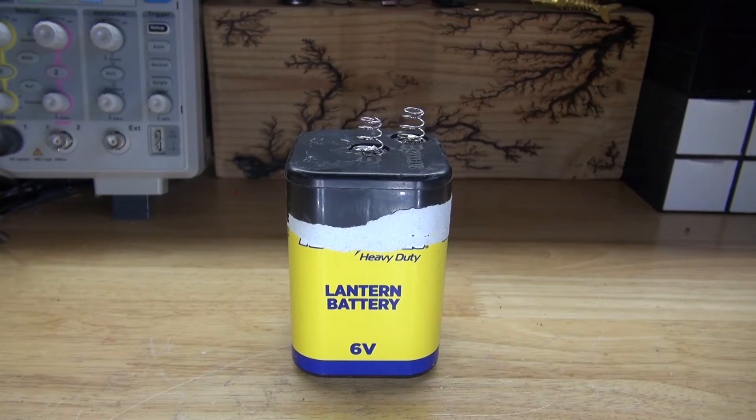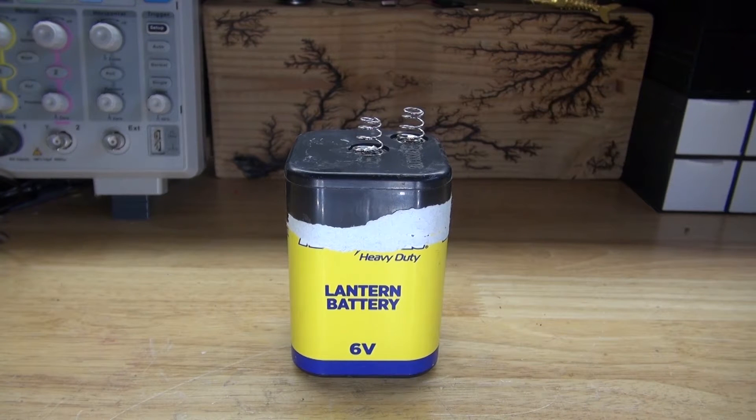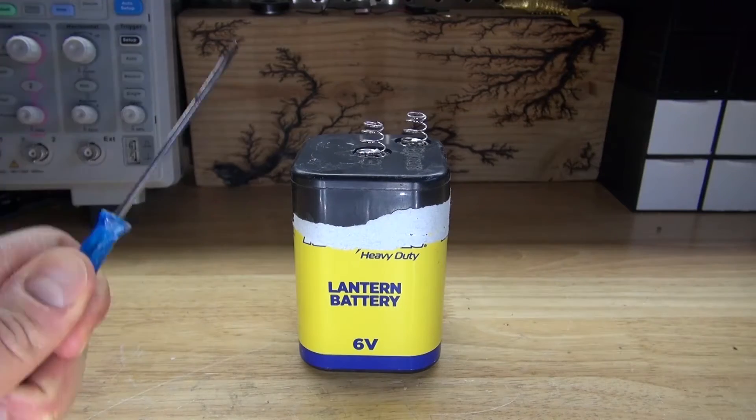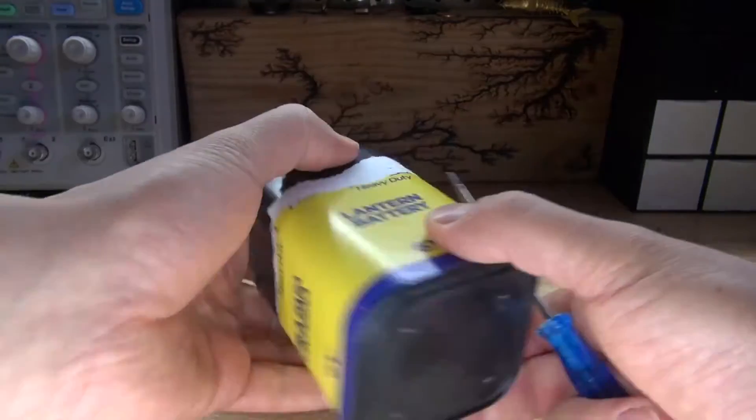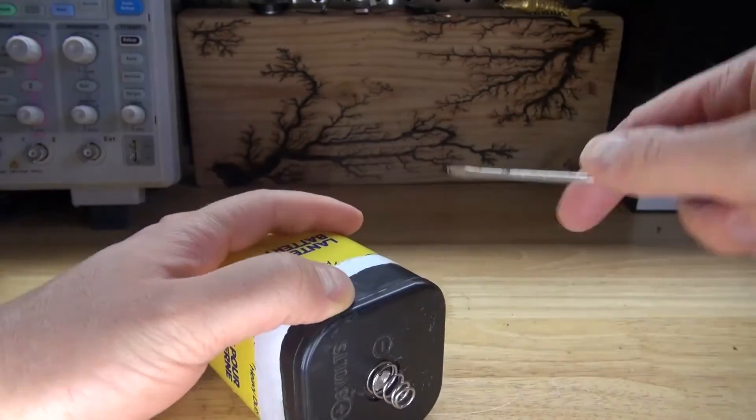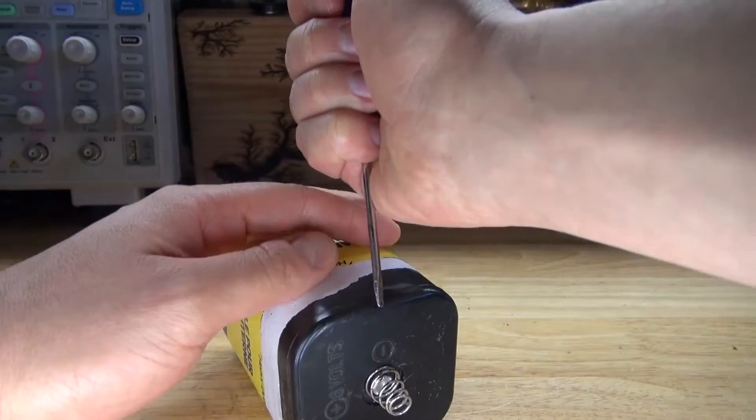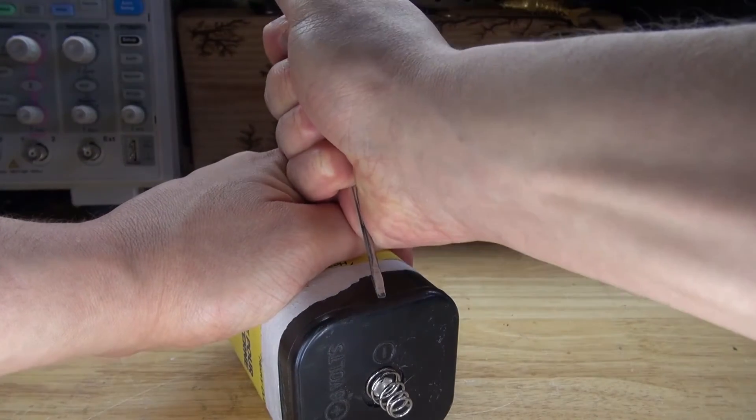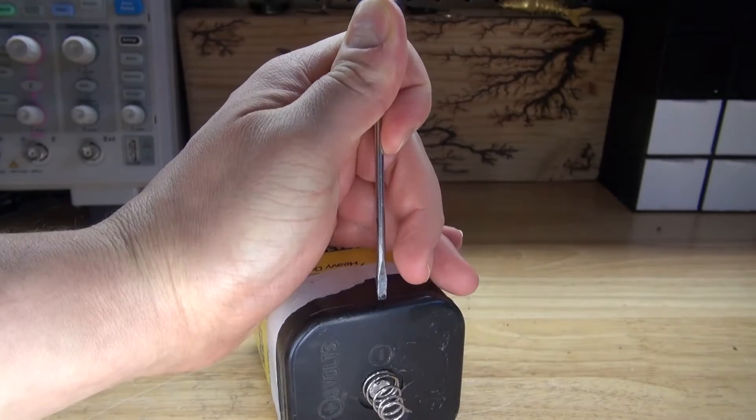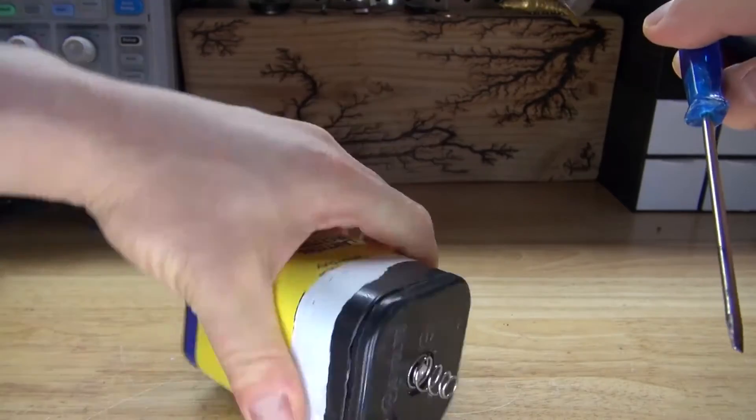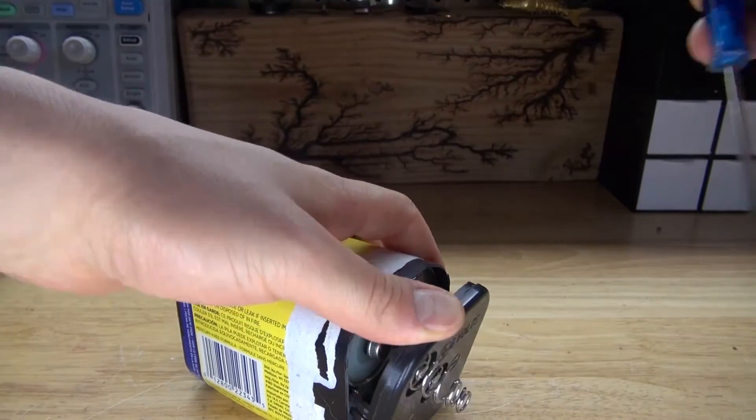I am right here with the 6 volt lantern battery and I need to open it up and extract the carbon electrode rods. First I need to take this flat screwdriver and place it right onto the seams. Prying it open won't work so I'm going to take a small hammer and tap it out. And there, the seal is now cracked.